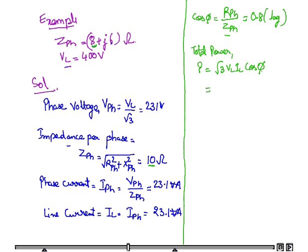Total power is root 3 times VL times IL times cos phi, where VL is 400, IL we have calculated is 23.1, and cos phi we have calculated is 0.8. Substituting the values, the value comes out to be 12,800 watts.